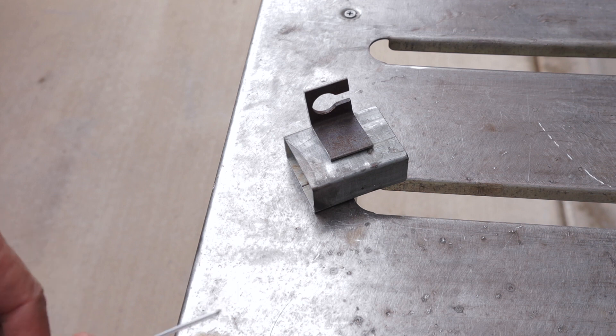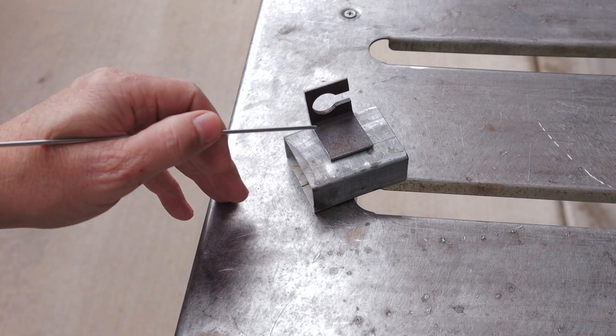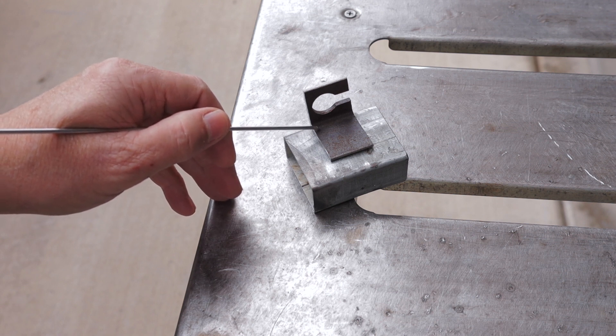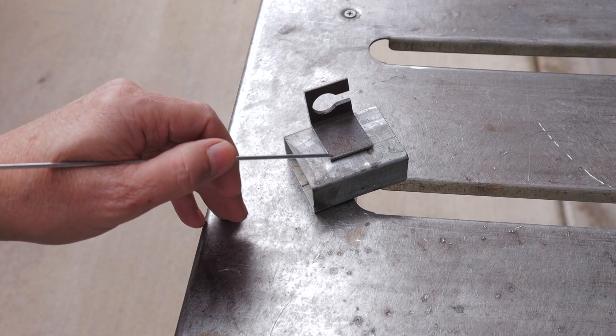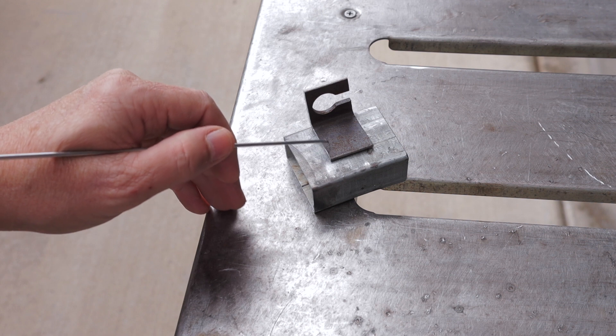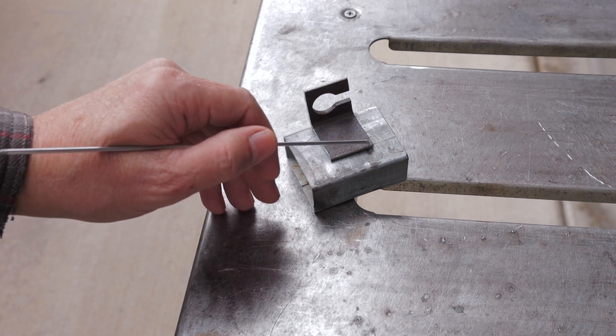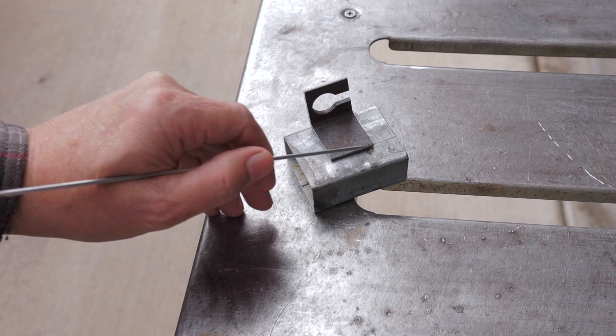Basically what I'll be doing is concentrating the heat on the edge of the thicker steel, on the corner of this one-eighth inch all the way around here, and just washing the puddle down into the thin material.